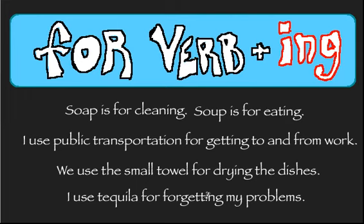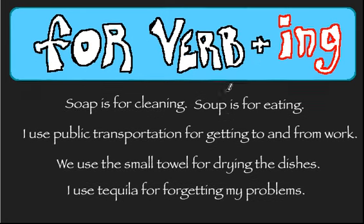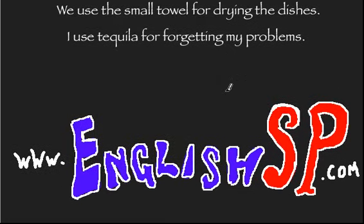So that's basically it. Remember: we use 'for' with nouns and with the verb -ing form, and we use 'to' with the regular verb. Television — to kill. Tequila — for forgetting. Awesome. This has been a grammar quickie. Thanks for joining.